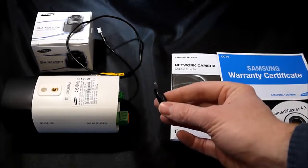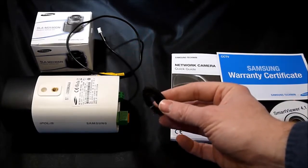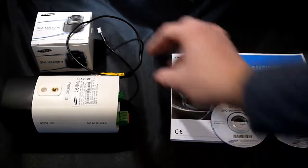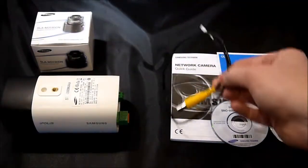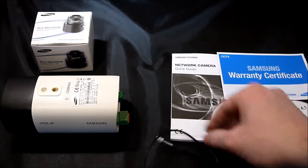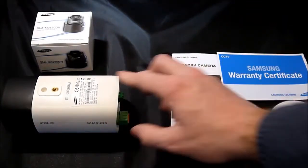We've got the CS to C mount adapter for your lens. It comes with an analog output cable so you can use it for focusing and adjustment. That plugs in right into the back.